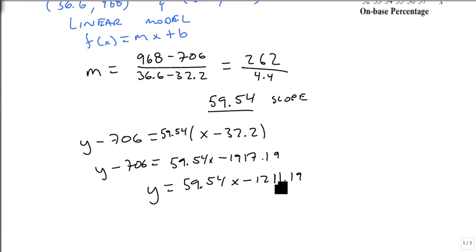And this says that if I can increase my points by 1, or my on-base percentage by 1, I'll increase by about 59 points. However, there's a significant breakdown here. Notice that this y-intercept says that if I don't ever get anyone on base, that means I'm going to lose 1211 points. That's a big deal.